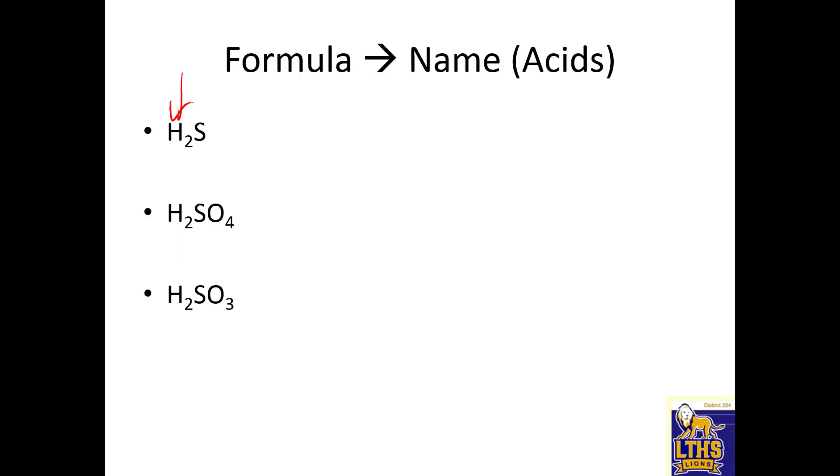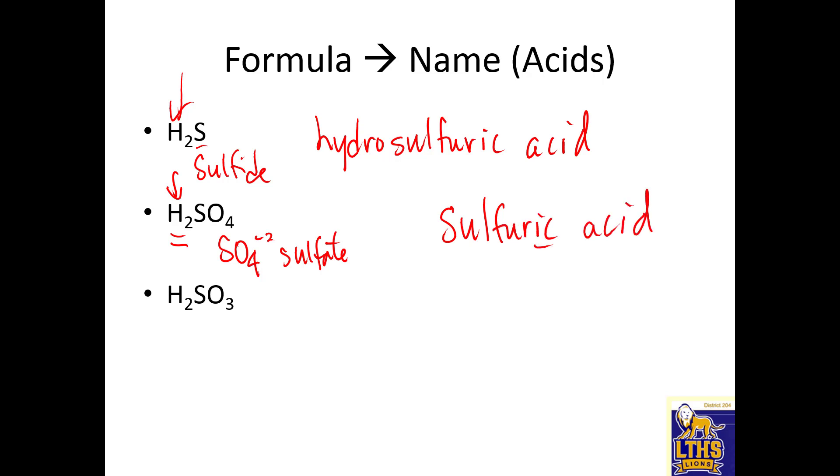H3PO4 is phosphoric acid. HClO3 comes from chlorate, so it's chloric acid. HCl comes from chloride, so it's hydrochloric acid. There's three endings for acids based on three endings for ions, and when you put the acid formula together, you put enough Hs to cancel charge. Let's practice.